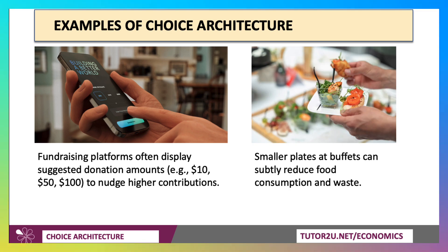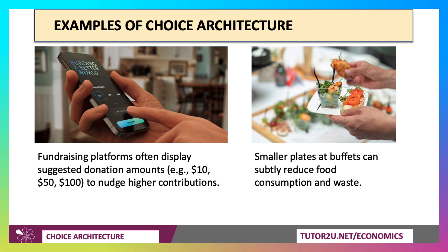Smaller plates at buffets, or already pre-packaged portions, can subtly reduce food consumption and waste. The thinking here is that if you have a slightly smaller plate at a buffet, it gets filled more easily and therefore people on average probably eat a little less. So the design, or the choice architecture, in restaurants — the placement and order of food — somebody has to make those decisions, and the architecture of choice is assumed to have an impact on the decisions we make.